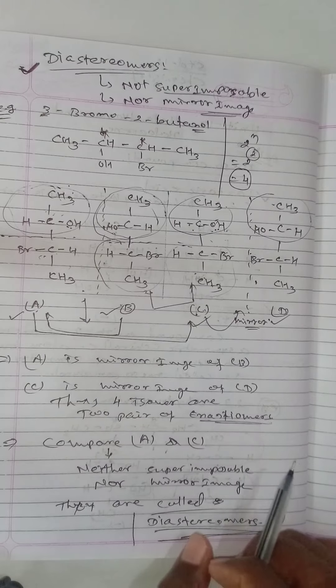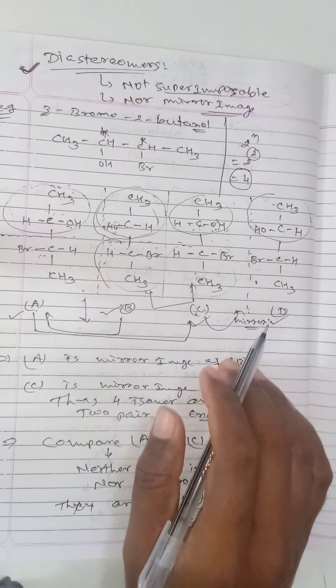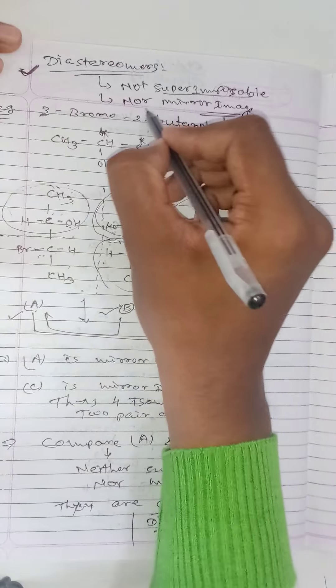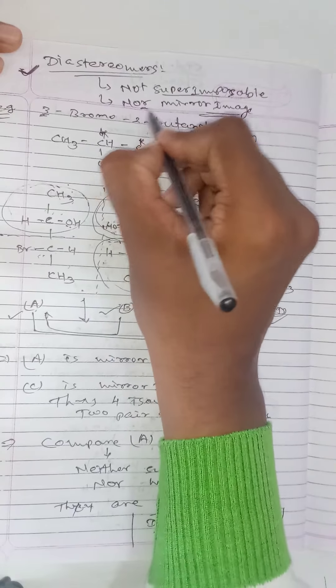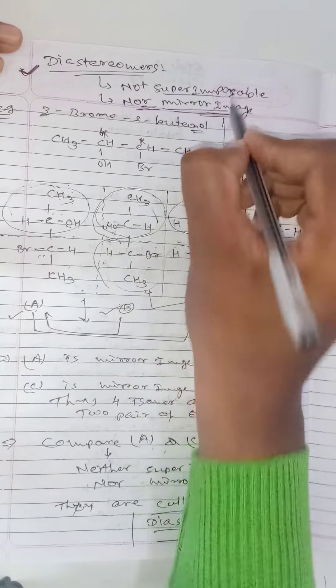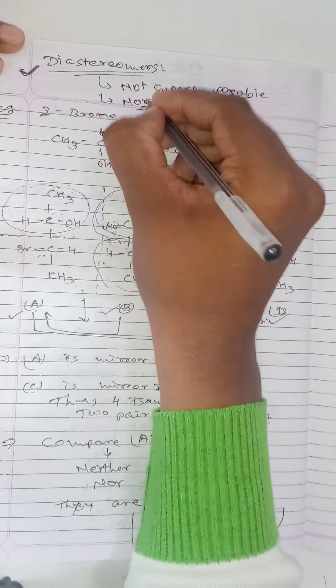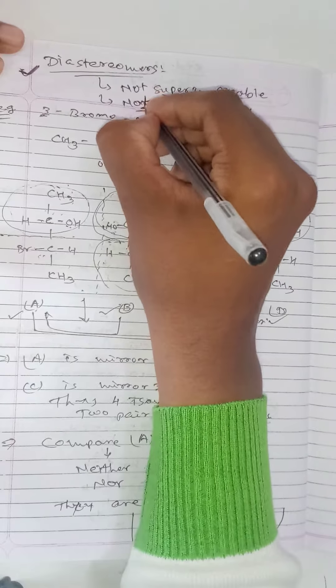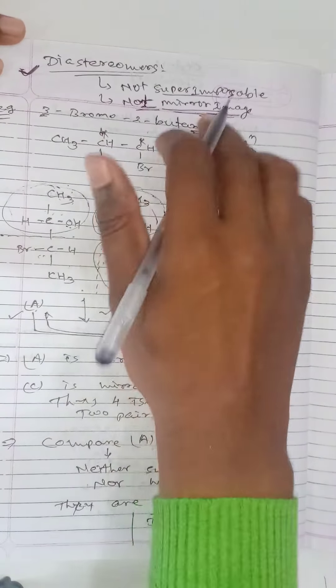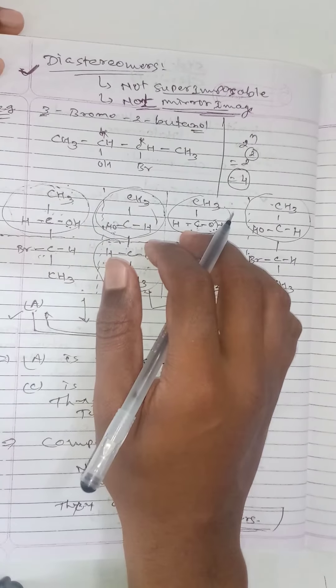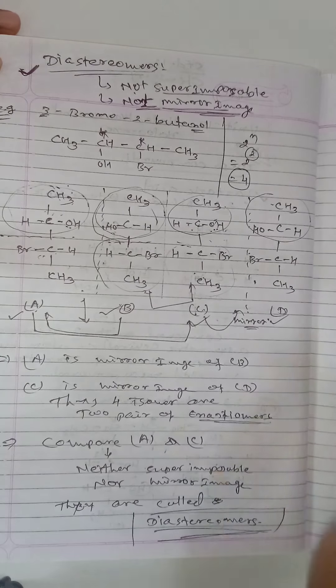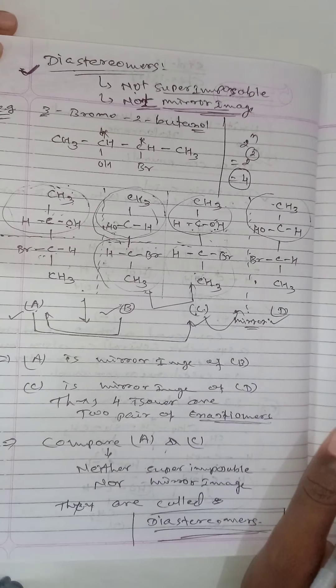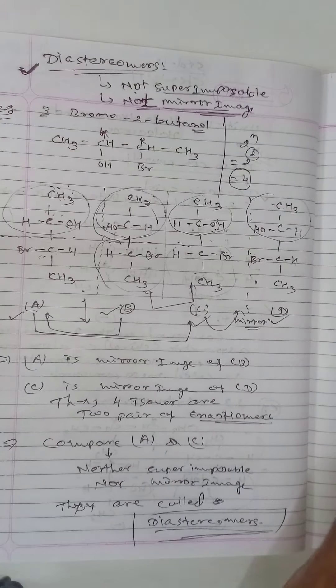So diastereomers are stereoisomers that are not mirror images of each other and not superimposable on each other. If stereoisomers are not mirror images and not superimposable, they are called diastereomers.